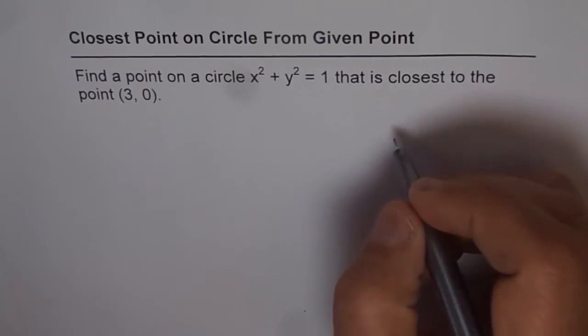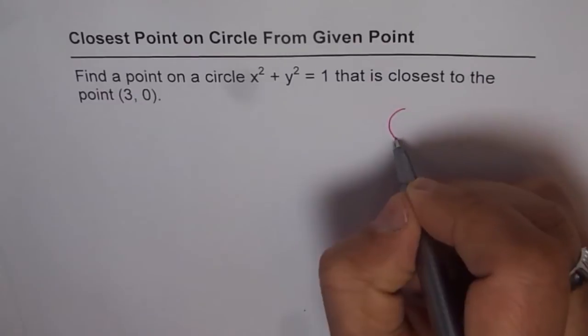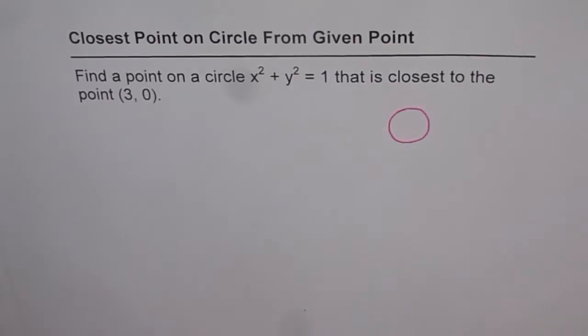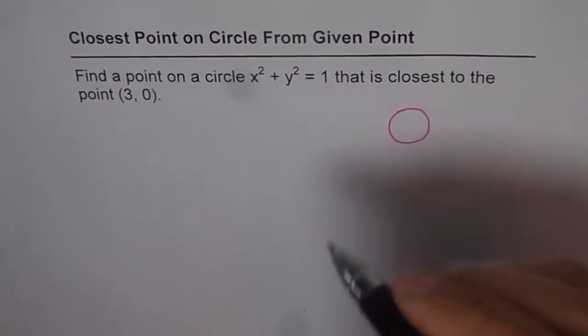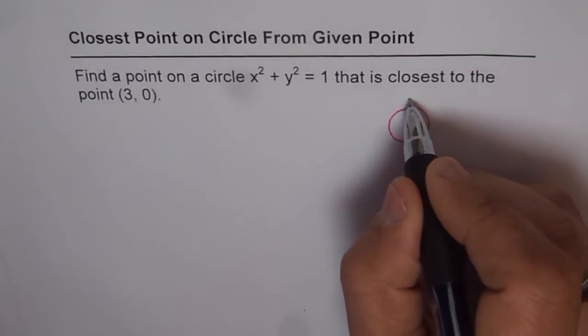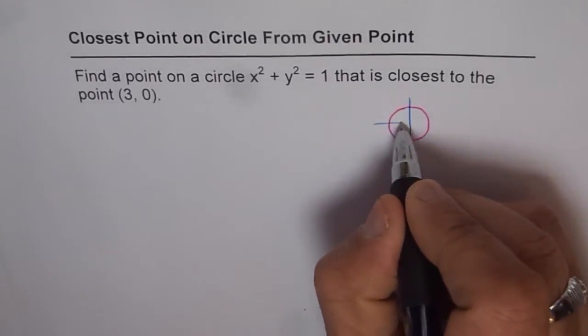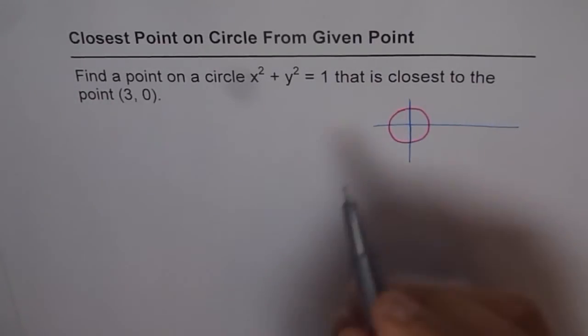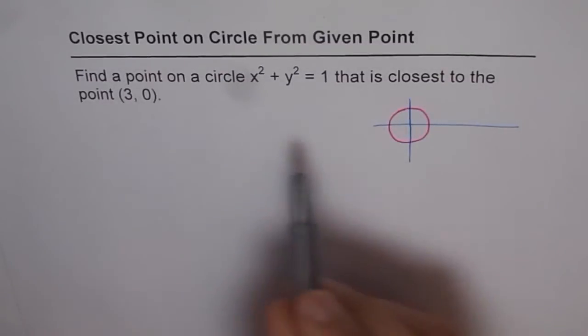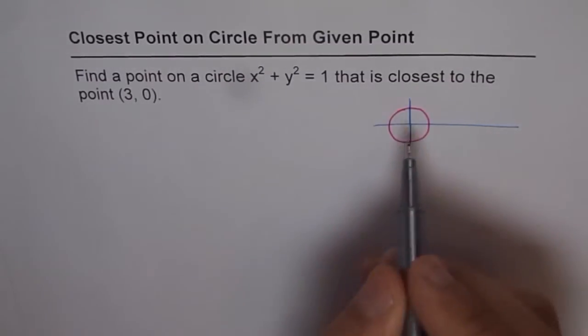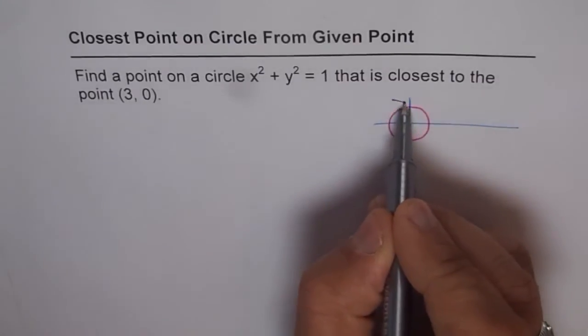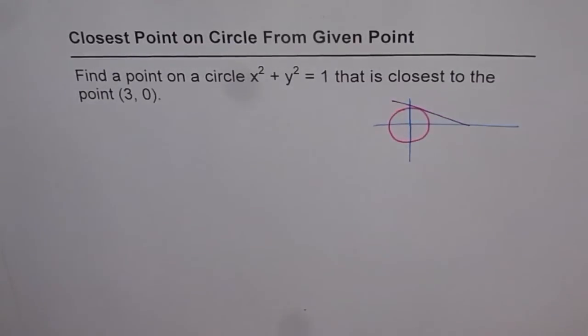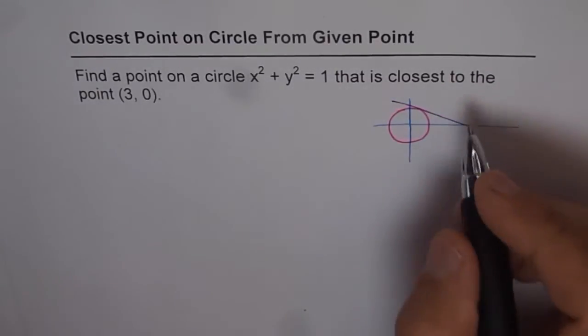Now to do this question let's first sketch. So we have a circle here with radius of 1 unit and that's my coordinate system. We are trying to find a point on the circle that is closest to the point 3,0. 3,0 is somewhere on this line. Let me draw a tangent touching this, and we will assume that this point here is 3,0.